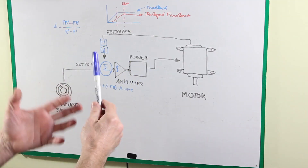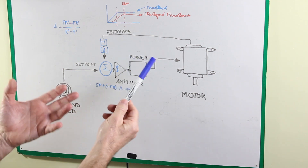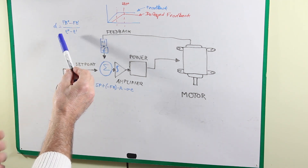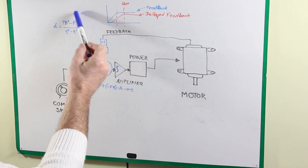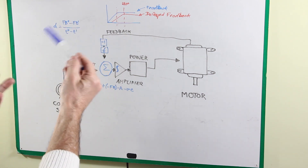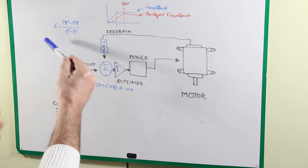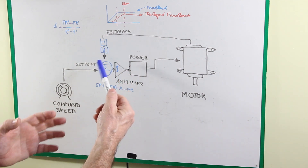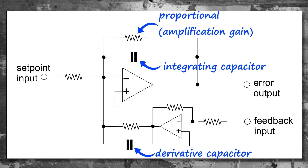Similarly, we can add something that works as a predictor of the future trend of the motor speed, and this can be done with a derivative. The derivative provides the difference between the speed now and what it was just a moment before, giving you a trend. The greater the difference, the more likely the motor will overshoot — so feeding this back provides compensation for that trend. In the electronic circuit, a capacitor in parallel with the resistor of the feedback input operates as a derivative, anticipating variations from the feedback.